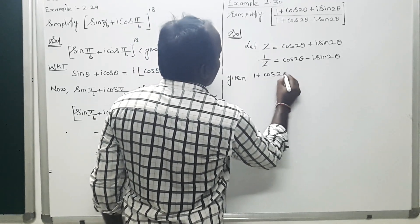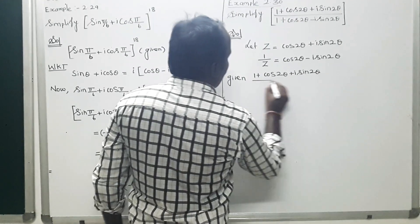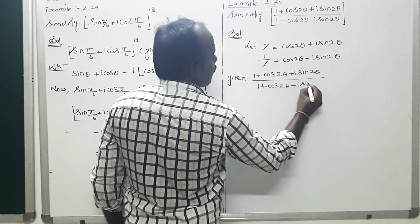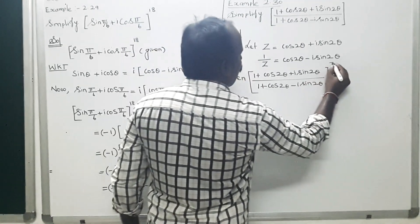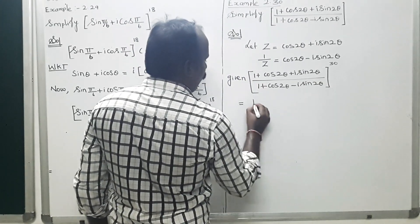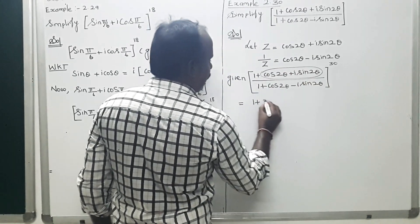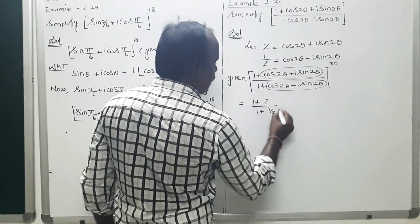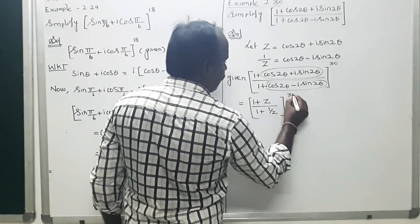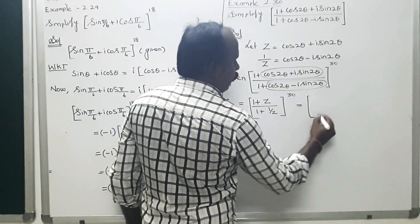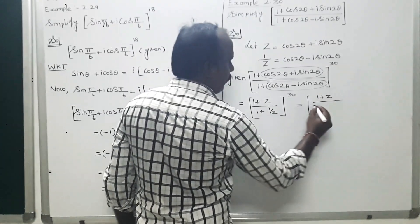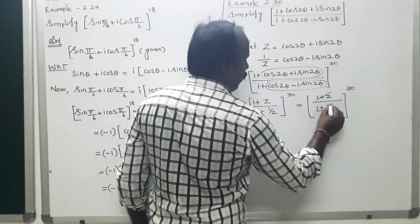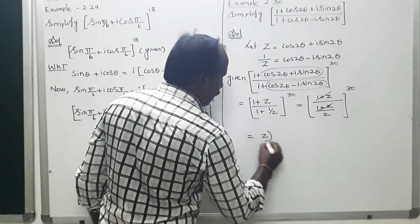The given expression becomes [(1 + z) / (1 + 1/z)]^30. The denominator 1 + 1/z equals (1 + z)/z, so the expression simplifies to [(1 + z) · z / (1 + z)]^30 = z^30.